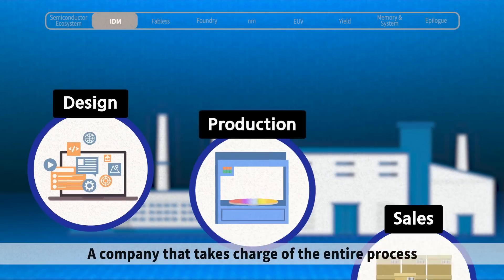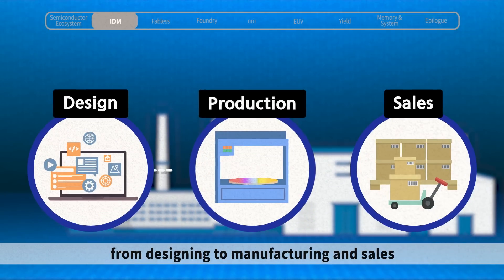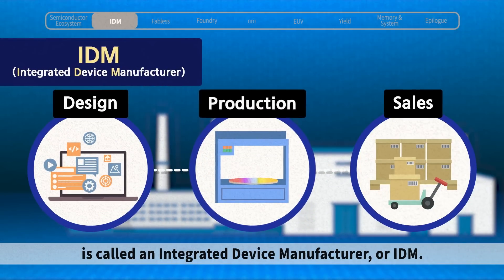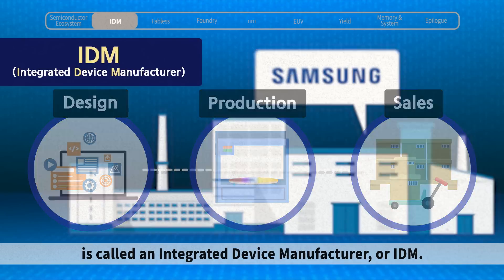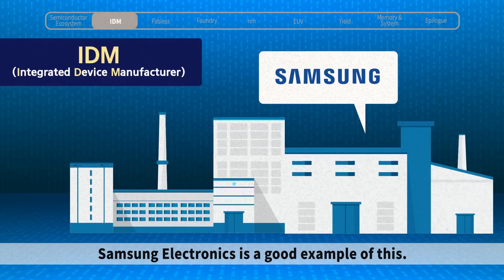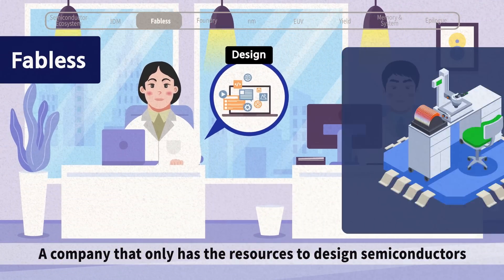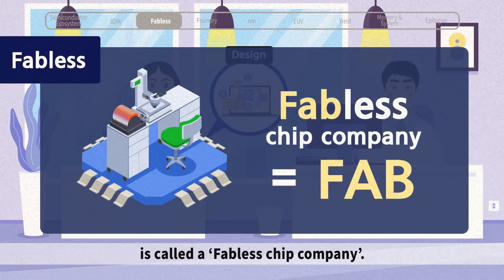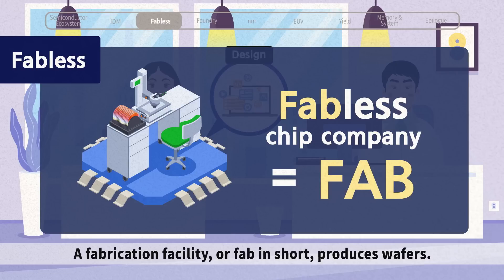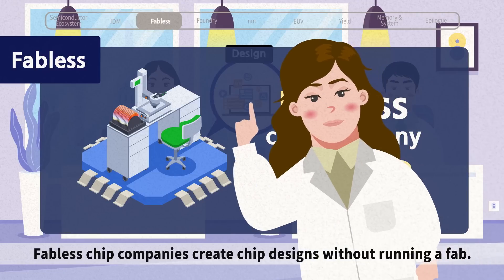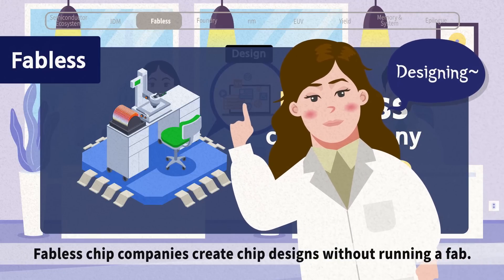A company that takes charge of the entire process from designing to manufacturing and sales is called an Integrated Device Manufacturer, or IDM. Samsung Electronics is a good example of this. A company that only has the resources to design semiconductors is called a Fabless Chip Company. A fabrication facility, or FAB in short, produces wafers. Fabless chip companies create chip designs without running a FAB.